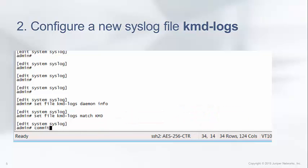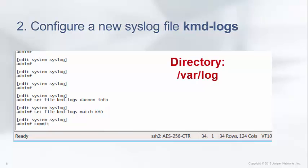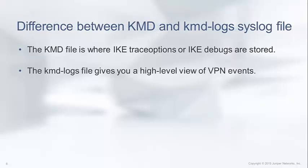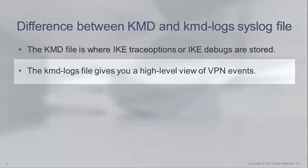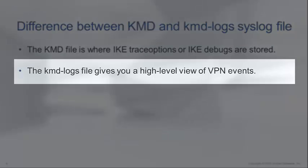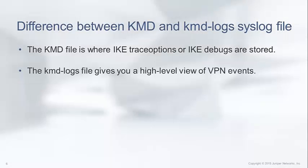The file KMD logs is written to the var log directory. From this point on, the file KMD logs will capture any VPN events initiated or negotiated with the SRX device. Before we view the KMD logs file, you may be asking: what is the difference between the KMD and KMD logs syslog file? The KMD file is where IKE trace options or IKE debugs are stored, whereas the new syslog file that we created in this video captures a high-level view of VPN events.